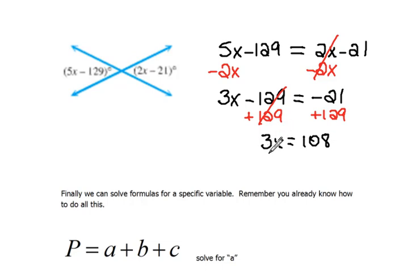Now we still need x alone, so we're going to do the opposite of multiply by 3, which would be to divide by 3. So we have x equals 108 divided by 3, which would be 36.